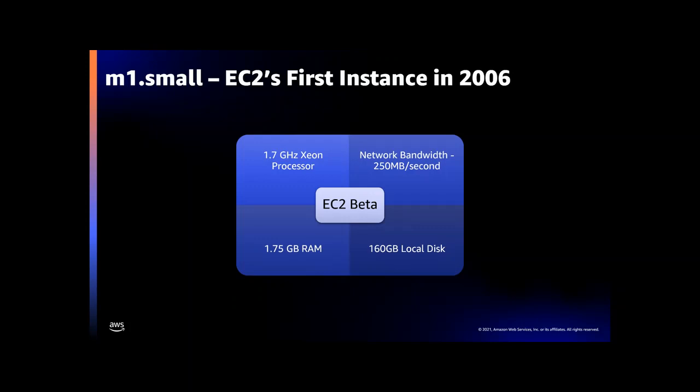Amazon EC2 instances are booted from AMIs, or Amazon Machine Images. Each AMI is a pre-configured disk image — a packaged-up operating system with all the user space components and drivers pre-installed. Initially these AMIs were stored as an S3 object and hydrated to a local disk on the host during launch. Later, with the introduction of Amazon Elastic Block Storage, EBS, we added the option to store and boot VMs directly from EBS volumes.